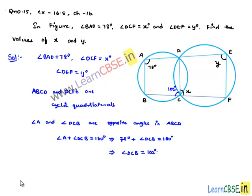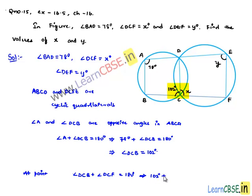At point C, angle DCB and angle DCF form a linear pair. Therefore, the sum of angles that form a linear pair is equal to 180 degrees. That is, angle DCB plus angle DCF equals 180 degrees, which gives 102 degrees plus angle DCF equals 180 degrees.